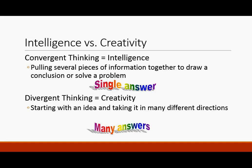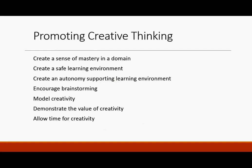Convergent thought is pulling several pieces of information together to draw a conclusion or solve a problem — it brings a single answer. Whereas divergent thinking brings many answers; we start with an idea and take it in many different directions.